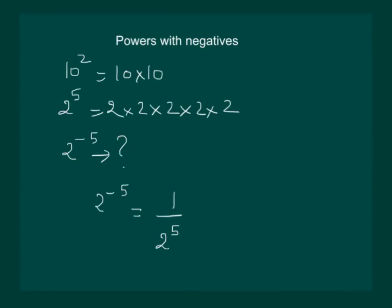Also, when we say 10 squared, here 10 is the base and 2 is the exponent. When we say 2 power 5, then 2 is the base and 5 is the exponent. When we say 2 power minus 5, then 2 is the base and minus 5 is the exponent.